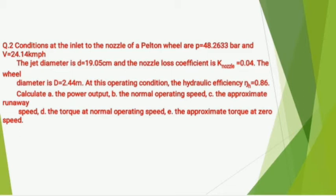Question Number Two: Conditions at the inlet to the nozzle of a Pelton wheel are p = 48.2633 bar and v = 24.14 kmph. The jet diameter d = 19.05 cm, nozzle loss coefficient k_nozzle = 0.04, and hole diameter D = 2.44 meter. At this operating condition hydraulic efficiency = 0.86. Calculate: (a) power output, (b) normal operating speed, (c) approximate runway speed, (d) torque at normal operating speed, and (e) approximate torque at zero speed.